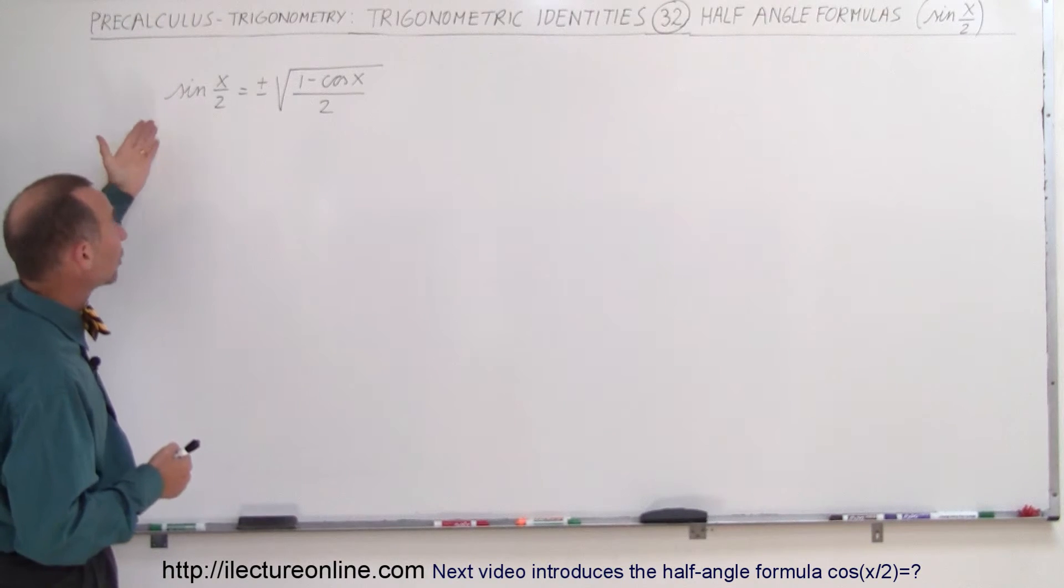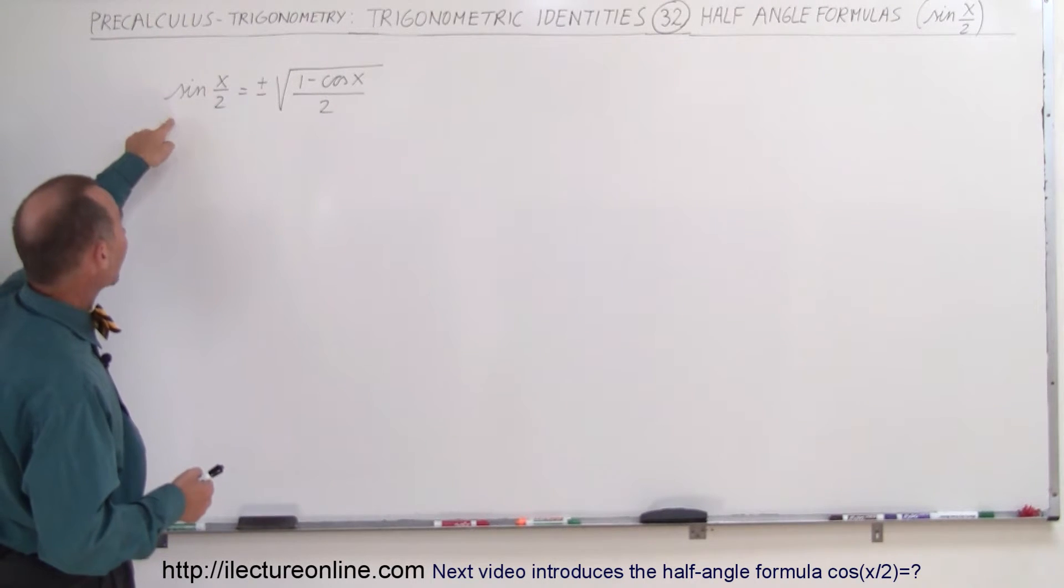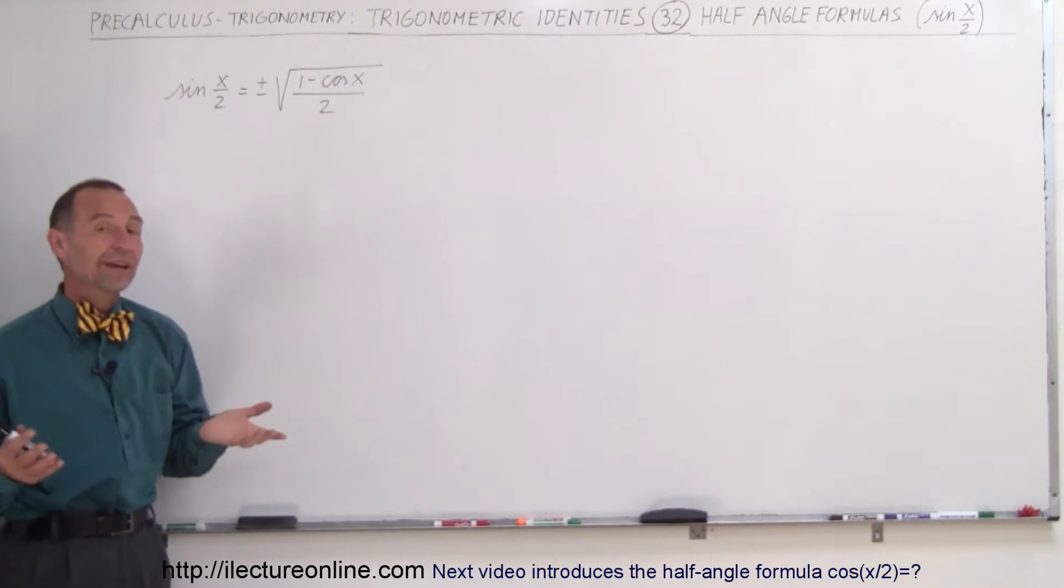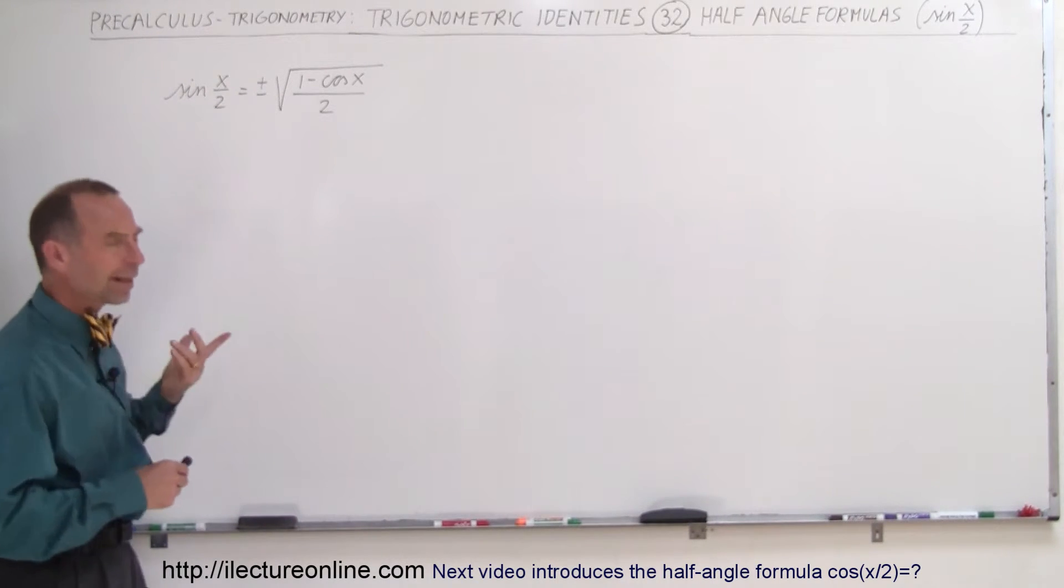Well, here's the equation or here's the identity. It shows that the sine of x over 2 is equal to plus or minus the square root of 1 minus the cosine of x divided by 2. So where did that come from?